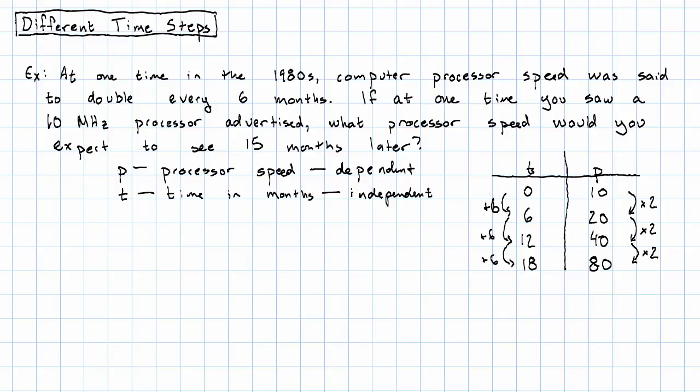So after 15 months, it's going to be somewhere between 40 and 80. But where between 40 and 80? Our linear intuition might expect that it's halfway in between. But this is not linear. It's exponential.